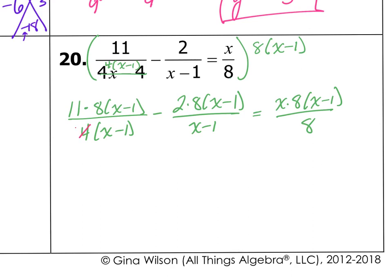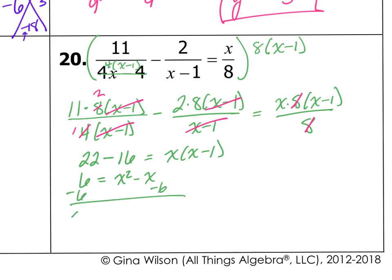So now I want to make 1s. 4 goes into 4 one time and into 8 twice. x minus 1 and x minus 1, x minus 1 and x minus 1, and 8 and 8. So what do I have left? I have 11 times 2 is 22 minus 2 times 8, which is 16, equals x times x minus 1. So 22 minus 16 is 6, equals x squared minus x. So subtract 6, and I'm going to get x squared minus x minus 6 equals 0.